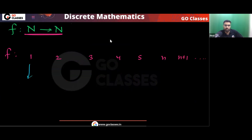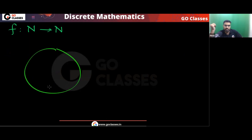So if you have one person, the number of handshakes will be 0. If you have two people, then number of handshakes will be 1. If you have three people, number of handshakes will be 3. Now let's assume in this room there are n people and there are f(n) handshakes — I don't know what f(n) is, I don't care.